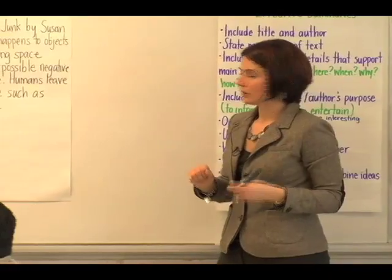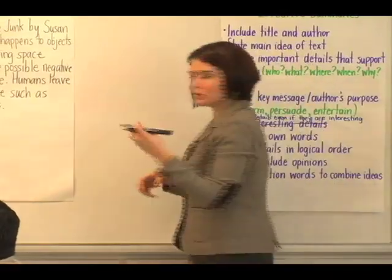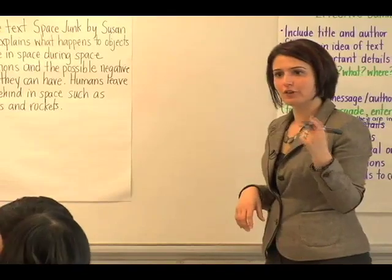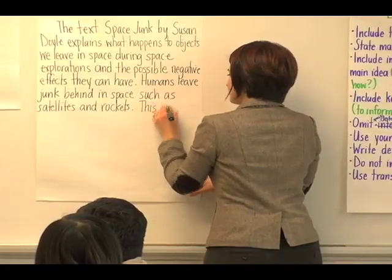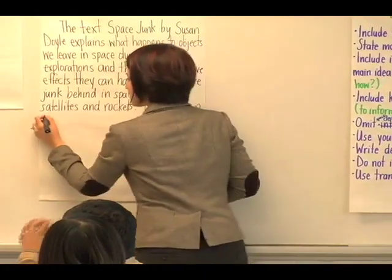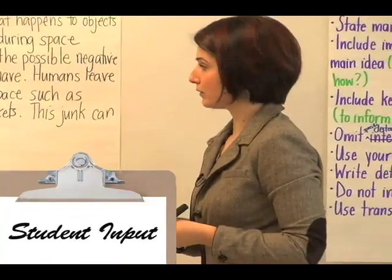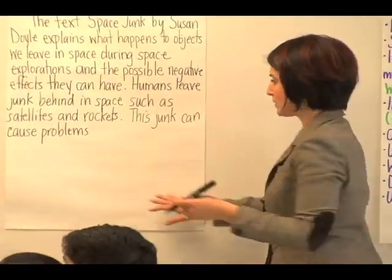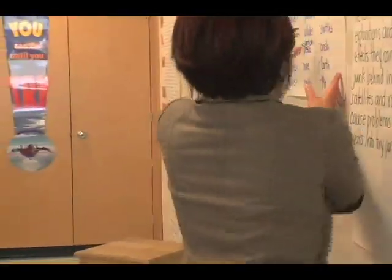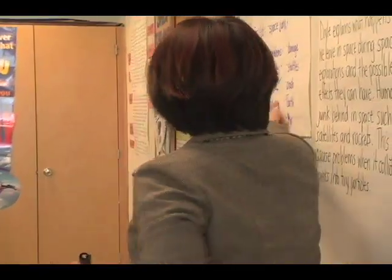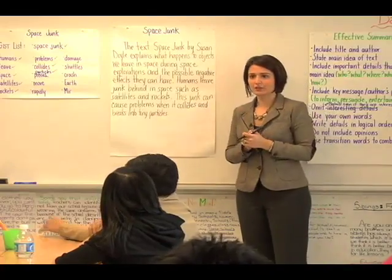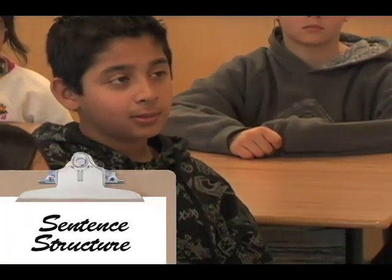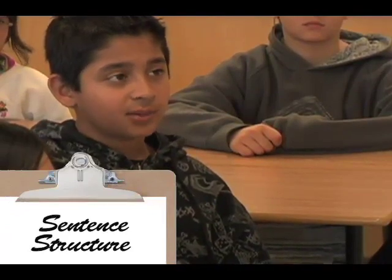Now I need to start adding how this is a problem. So I'm going to start this sentence but help me finish it off using the rest of the gist words. 'This junk can cause problems.' How? When it collides, it explodes into smaller particles. So this junk can cause problems when it collides — we have collides, particles. Now we've got move rapidly, damage shuttles, crash earth, mirror that we need to put together in our summary. 'These particles can move rapidly, which could cause damage to space shuttles.'